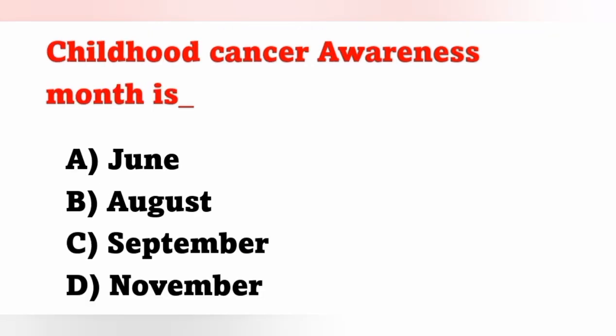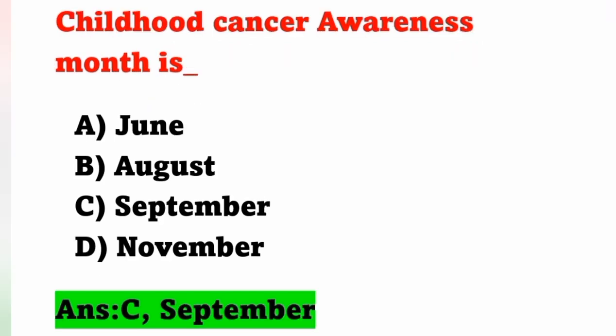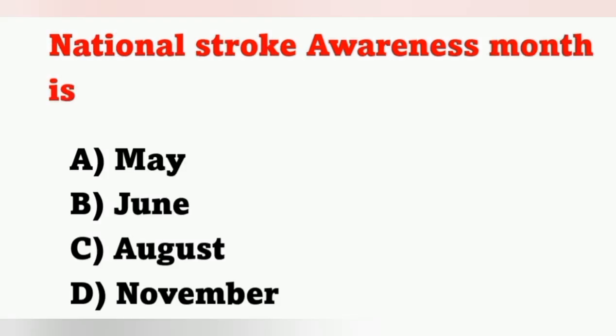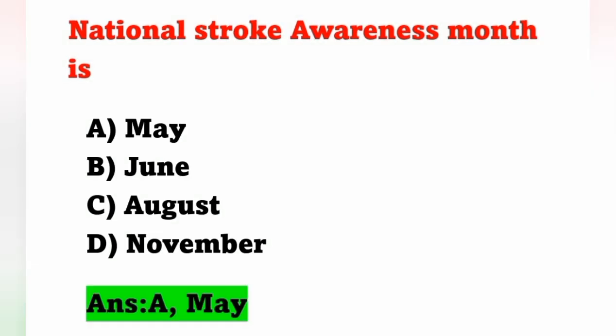Next question: Childhood cancer awareness month is? Options: A) June, B) August, C) September, D) November. Childhood cancer awareness month is September. Option C is the correct answer. Next question: National stroke awareness month is? Options: A) May, B) June, C) August, D) November. National stroke awareness month is May. Option A is the correct answer.